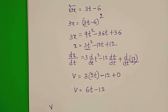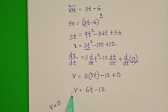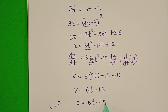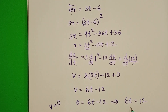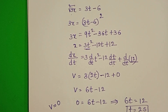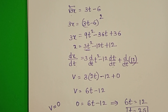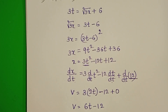Now we have to find out displacement when velocity equals 0. Substitute 0 in place of velocity: 0 equals 6t minus 12. From this, 6t equals 12, and time equals 2 seconds. Now we know the time.